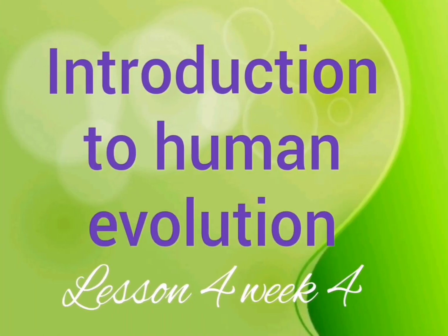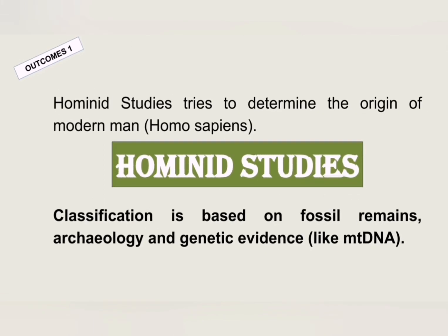Now that we've done the basics of evolution and evolution according to natural selection, we're going to move on and look at evolution of man, of humans, Homo sapiens. The chapter is called hominid studies, because hominid studies is the field of study that tries to determine the origin of modern man — Homo sapiens — which is our genus and species name.